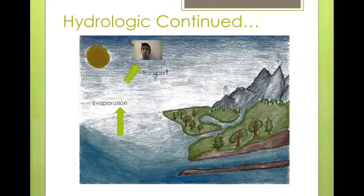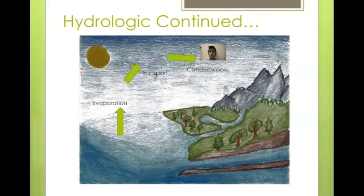Transport is the movement of water through the atmosphere. As the water vapor is transferred from an area of higher temperature to an area of lower temperature, it condenses into little water droplets that are formed in clouds.